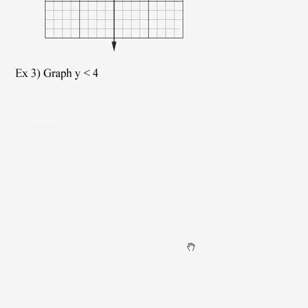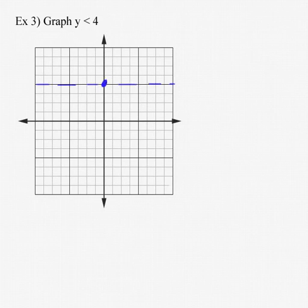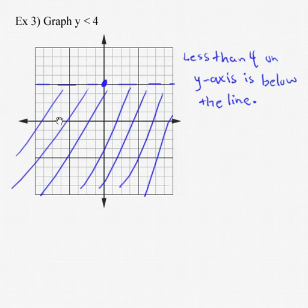Let's graph another one: y is less than 4. In this case, if there's no x in the equation, it never crosses the x-axis — it's going to be parallel to the x-axis, going through the point where y crosses the y-axis at 4. There is no equal sign, so again we want a dotted line. We can reason out the answer: where do we find points less than 4? Less than 4 on the y-axis is everything below the line — 3, 2, 1, 0, negative 1. So we shade in everything below the line as part of our answer.